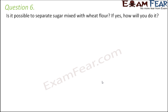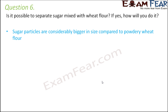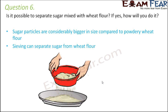Question number 6: is it possible to separate sugar mixed with wheat flour? If yes, how? Comparing their sizes, sugar particles are comparatively bigger as they exist in crystal form, while wheat flour is in powdery form with extremely small particle size. Since the two components differ in size, the best way to separate them is sieving — the wheat flour passes through the sieve while the larger sugar crystals are retained, separating them completely.